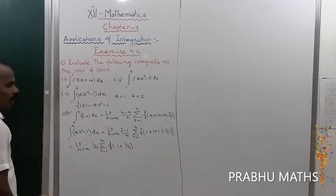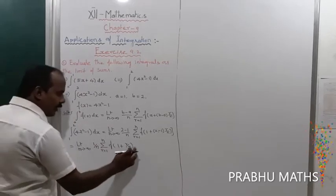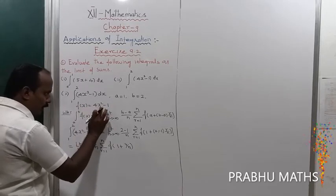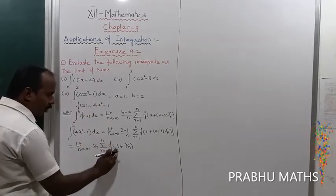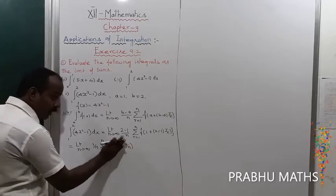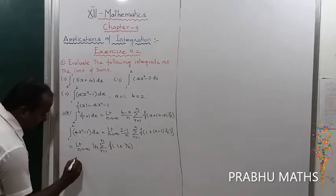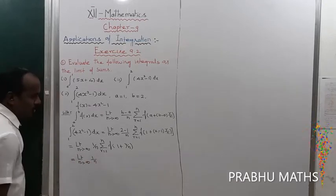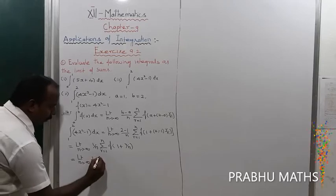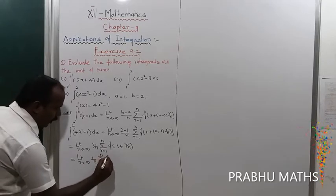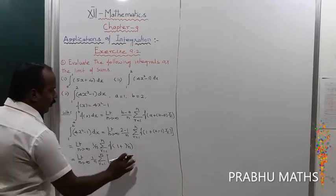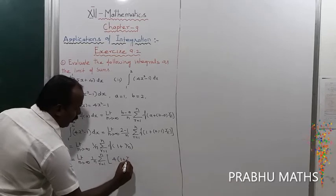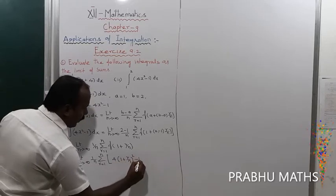So 1 plus r/n. Since f(x) = 4x² - 1, the x value is replaced by (1 + r/n). This gives: limit n tends to infinity of (1/n) times the summation from r equals 1 to n of 4 times (1 + r/n) whole squared minus 1.